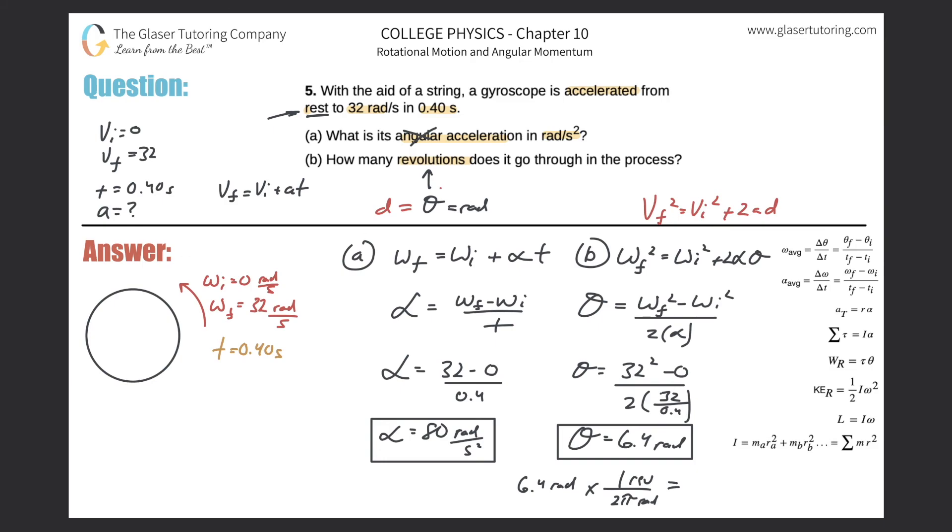Take your 6.4 and divide it by 2π, and we get a value of about 1.02 or so. It looks like one sig fig, so 1.0 revolutions. It obtains about one revolution.